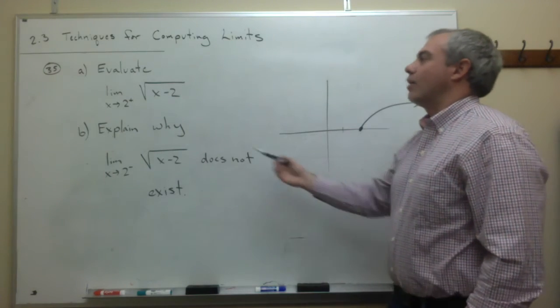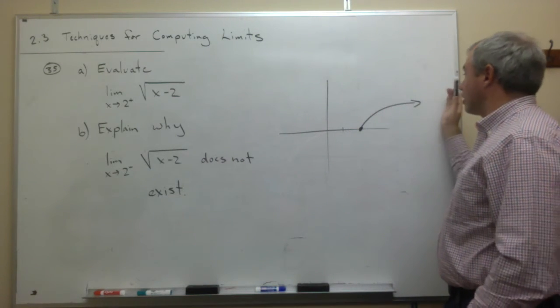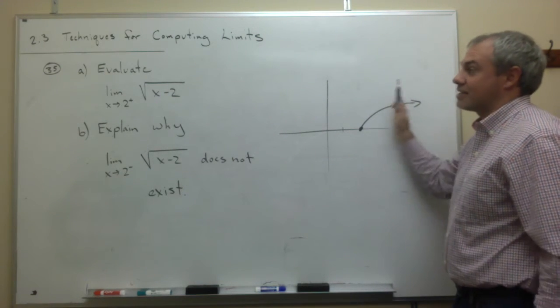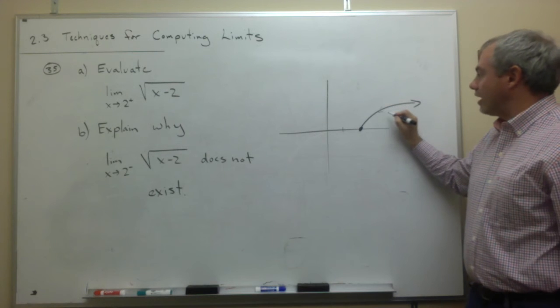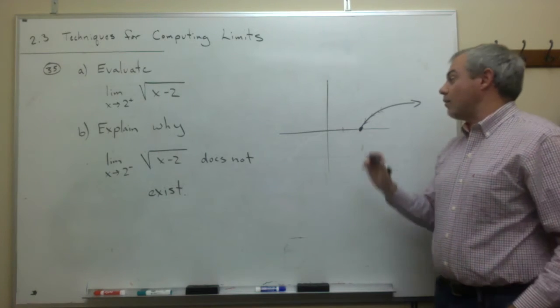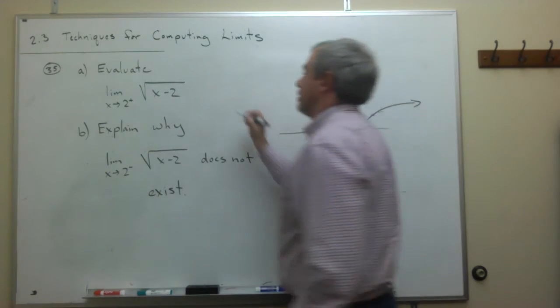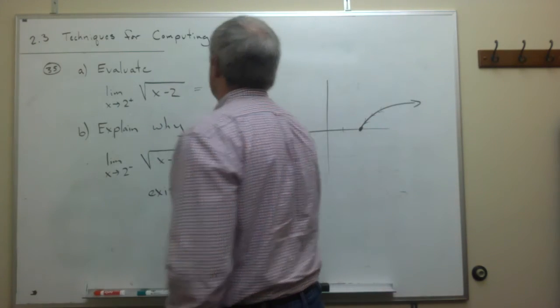So we're saying, what's the limit as x goes to 2? So as x gets closer to 2, coming from the right-hand side. So as we come in from the right-hand side, we're getting closer and closer to some y value. What is that y value? In this case, the y value would be 0. So this limit is 0.